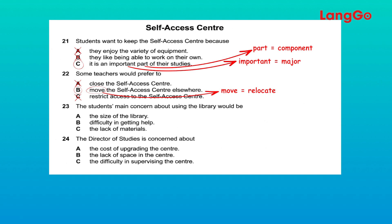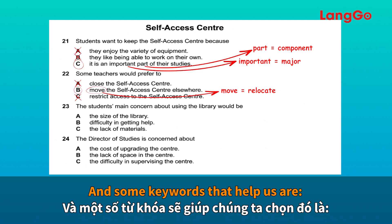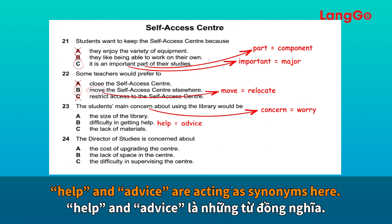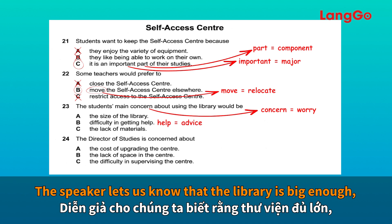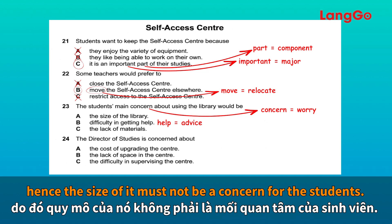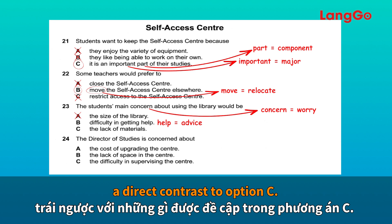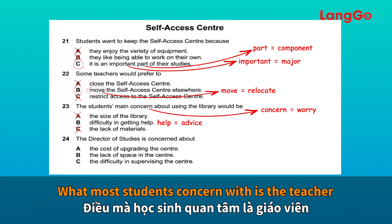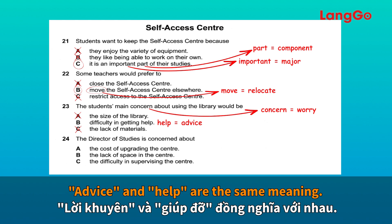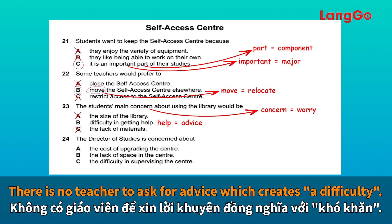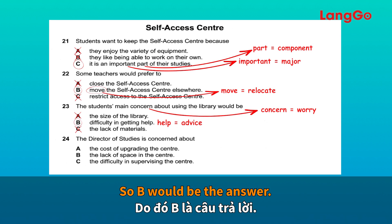Number 23: the students' main concern about using the library would be — the library is big enough to incorporate the self-access center but it wouldn't be like a class activity anymore. Their main worry would be not being able to go to a teacher for advice. Key synonyms here are 'concern' and 'worry,' and 'help' and 'advice.' The size of the library is not a concern, so A is not true. There will be plenty of things to do, so C is incorrect. Students are most concerned about having no teacher available to ask for advice, so the answer is B.